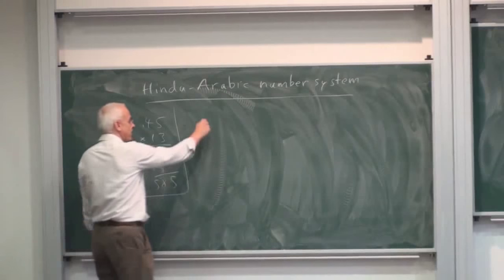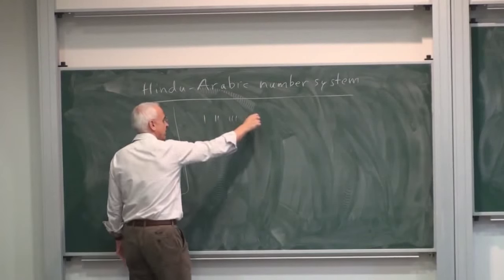Well, the Egyptians used some kind of hieroglyphics, one, two, three, and then they had various symbols for things.